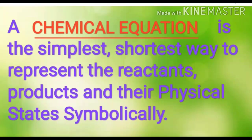A chemical equation is the simplest, shortest way to represent the reactants, products and their physical states symbolically. For example, when a magnesium ribbon is burnt in oxygen, it gets converted to magnesium oxide. This description of a chemical reaction in the form of a sentence is quite long. If we write it in a shorter form representing reactants and products in symbols, then it is a chemical equation.